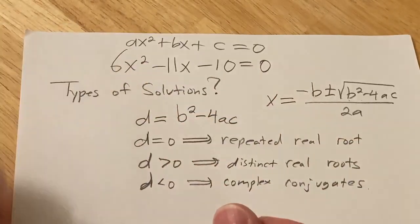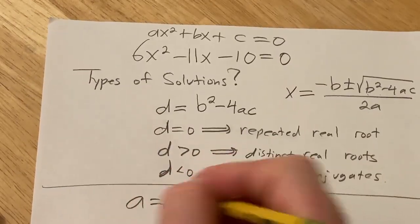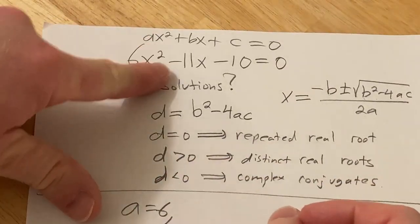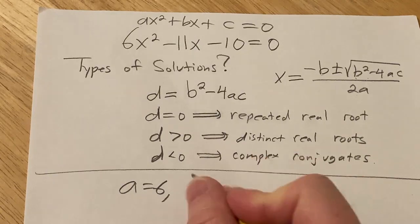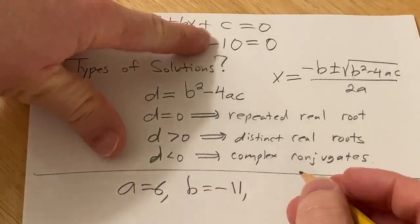So a is 6, just for matching here. So a is 6, b is negative 11, and c is negative 10.